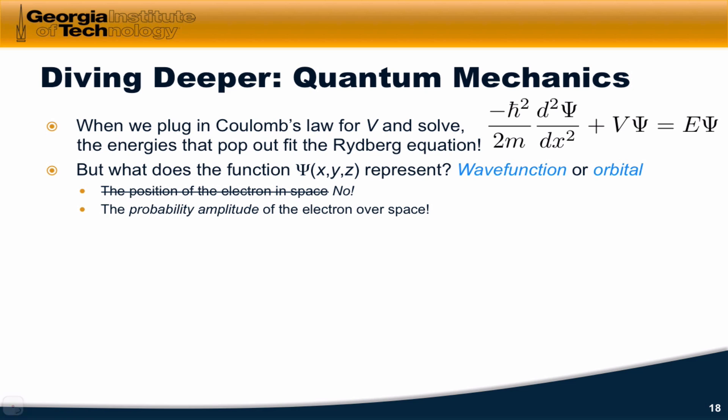Quantum mechanics throws that out and says we cannot know the specific position of, for example, an electron in space. Instead, quantum mechanics says, we can only know what's called the probability amplitude of the electron over space. We can only know a probability wave for the electron.